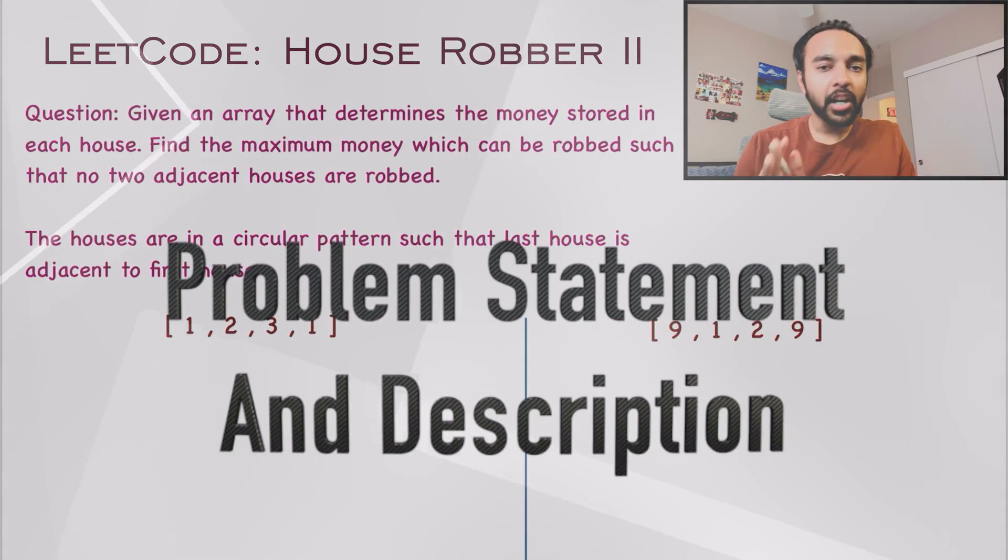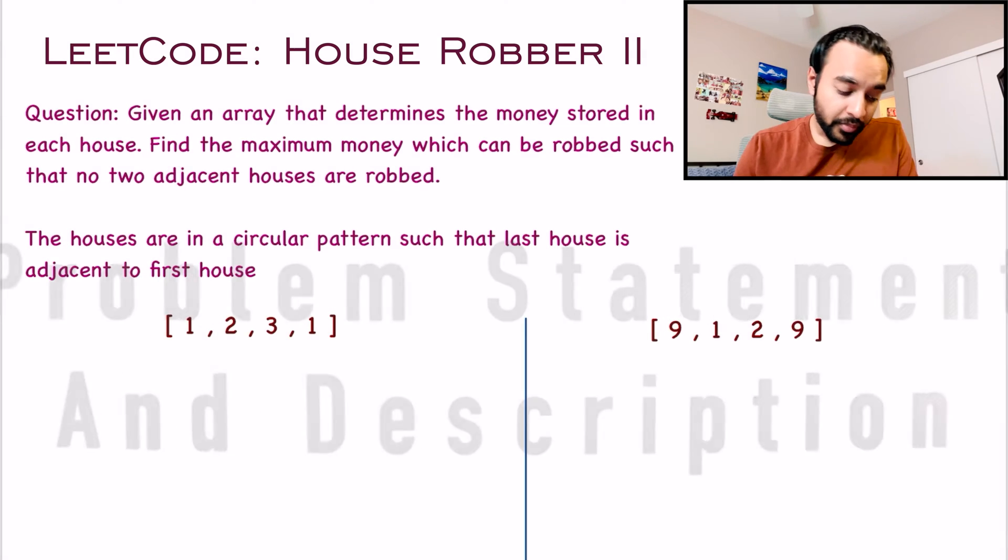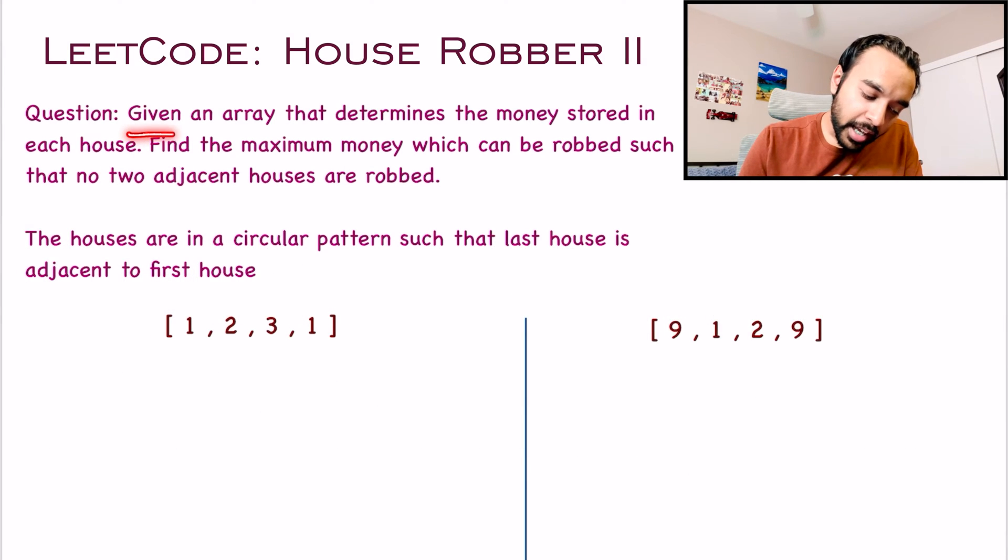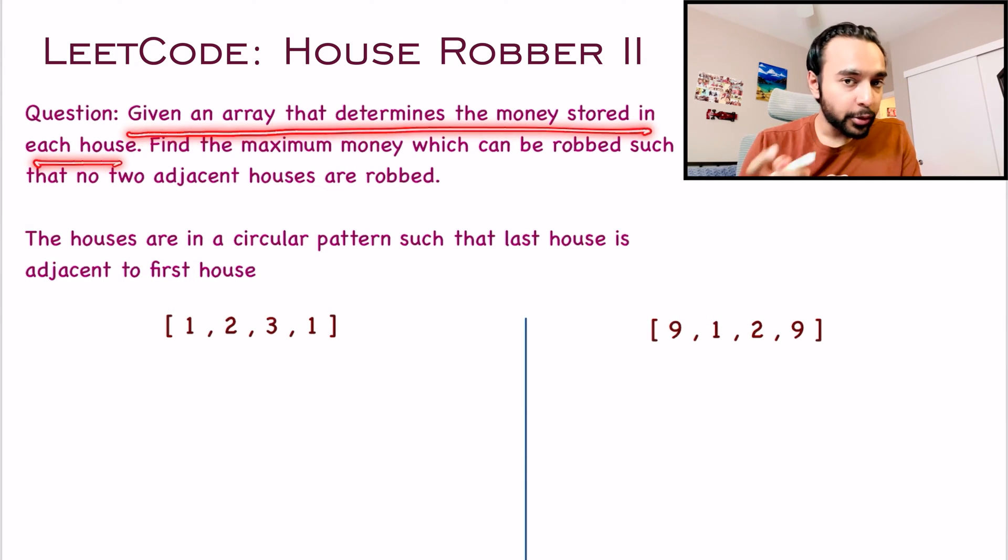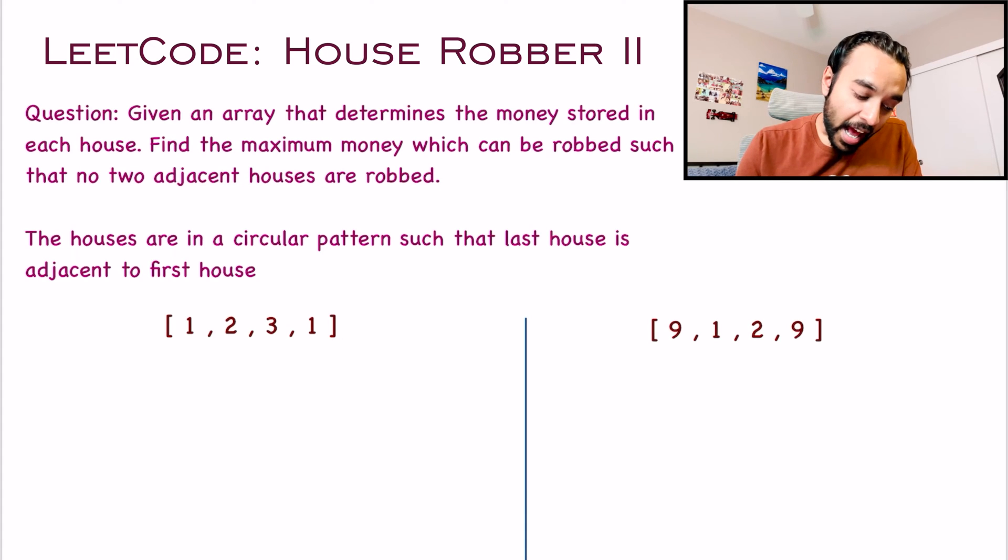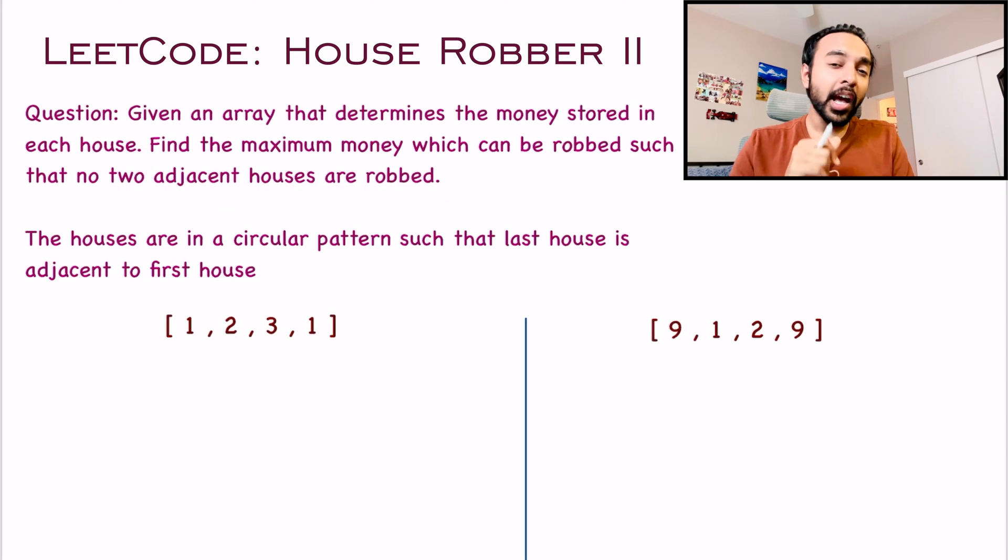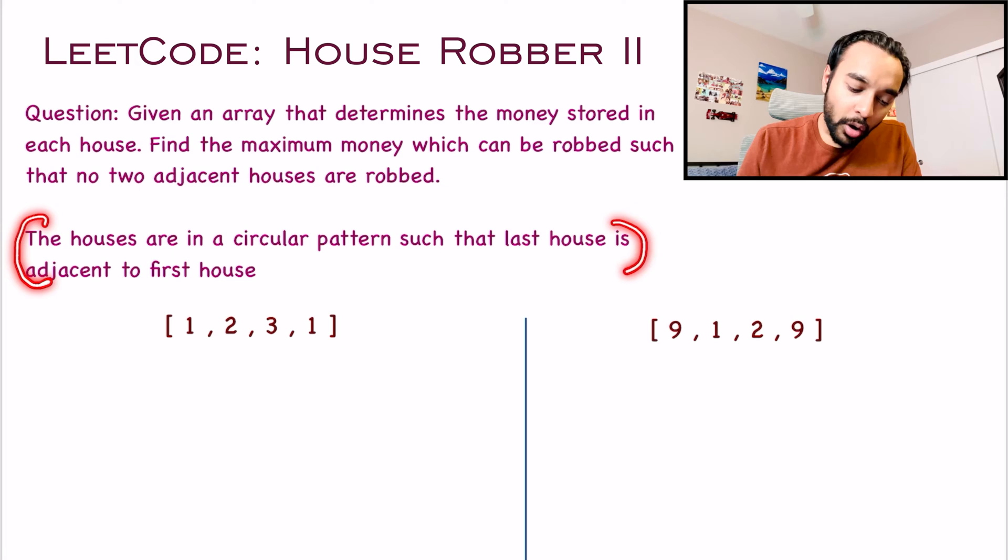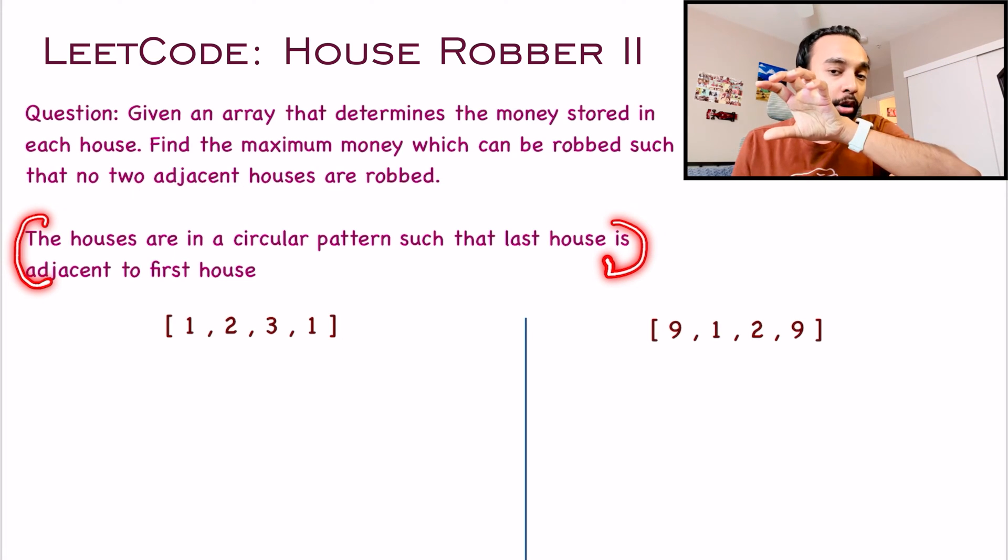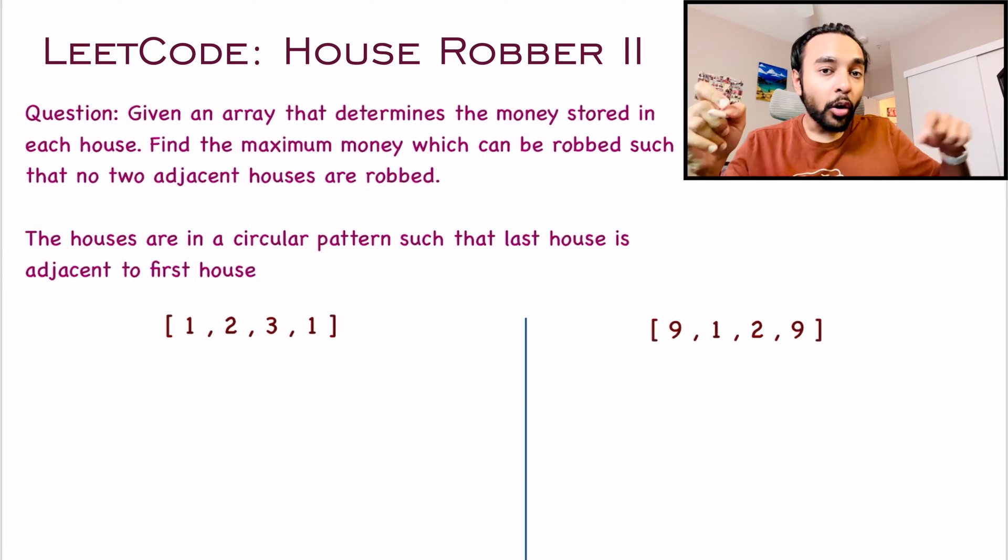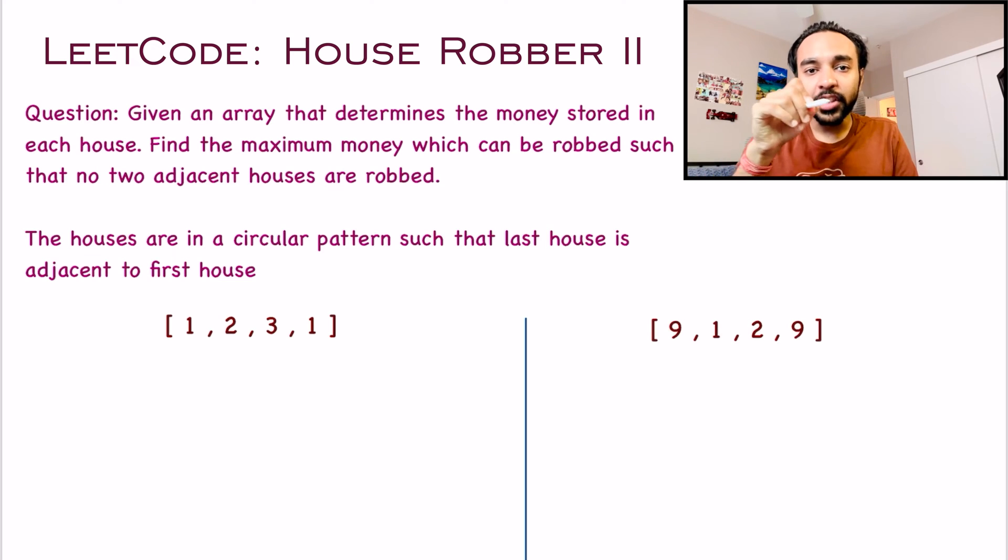Let us quickly make sure that we are understanding the problem statement correctly. Once again, you are given an array that determines the money stored in each house. And you have to rob the maximum amount of money given the condition that no two houses can be adjacent to each other. However, there is a certain twist in this problem. The only twist is that the last time all the houses were in a kind of a row, but this time all of these houses are arranged in a circular fashion.